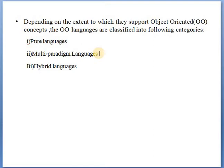The last one is hybrid language. Hybrid means mixture. Languages that support some of the object oriented concepts are called hybrid languages. In these languages, some of the features of object oriented programming are used. Java, Python, and C# are examples of hybrid object oriented languages.